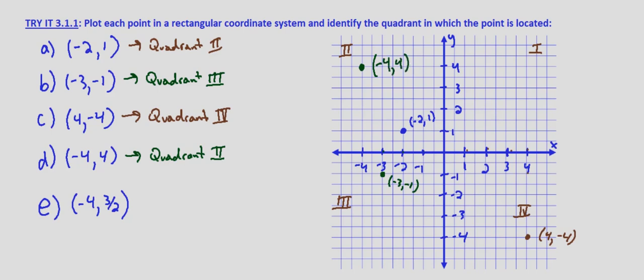Last but not least, with part e, we have negative 4, 3 halves. Again, that's negative x and positive y, so we're going to end up in the second quadrant again. We go 4 units to the left and 3 halves units up — that's 1 and a half. This point right here is going to be negative 4, 3 halves.